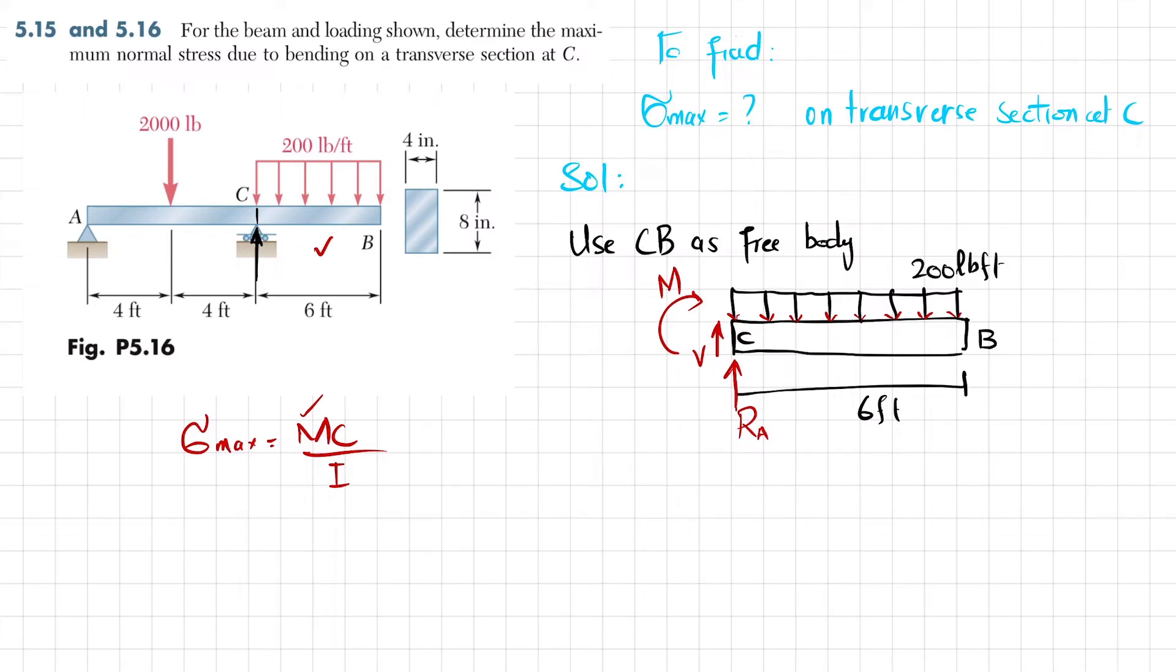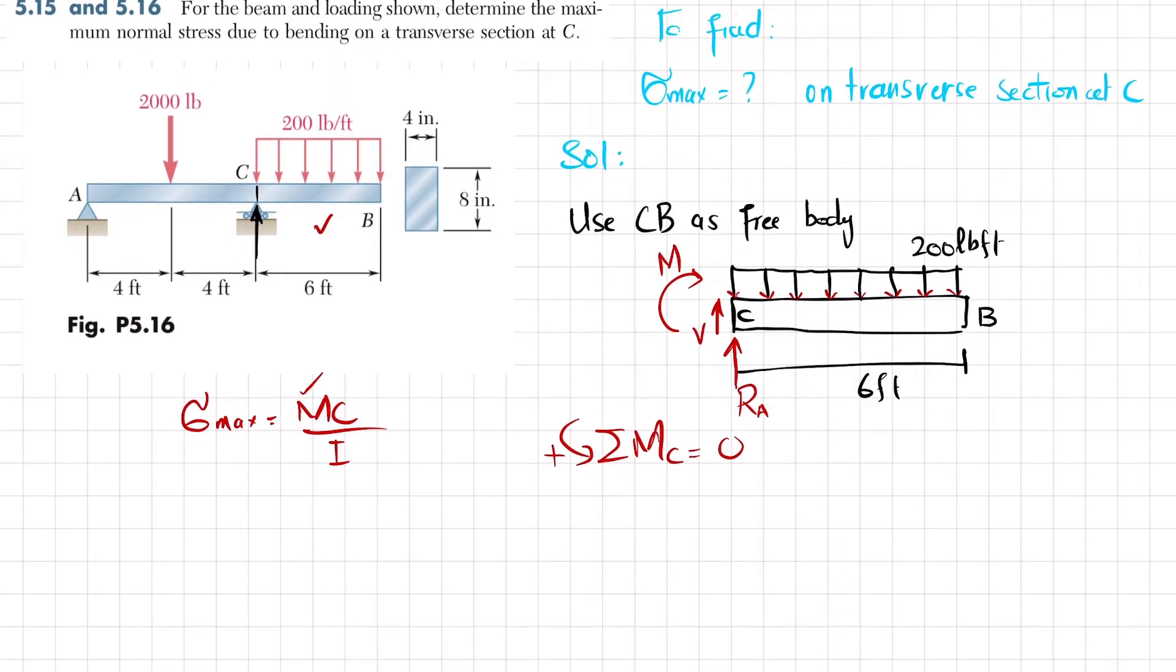For moment at point C, we will take the equilibrium condition that sum of all moments about point C equals zero, taking counterclockwise moment as positive. There is no moment due to reaction force because it passes through point C. You can see there is external moment minus M.